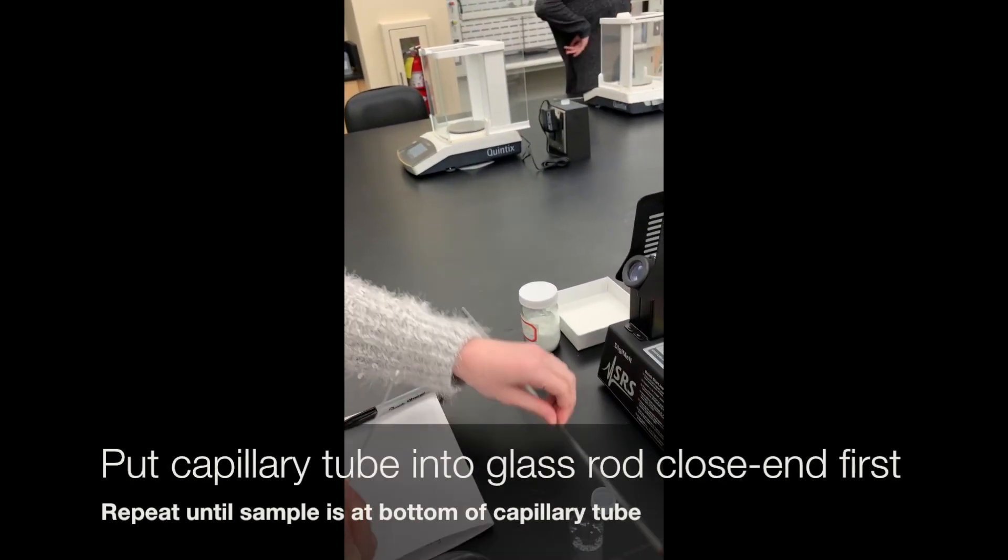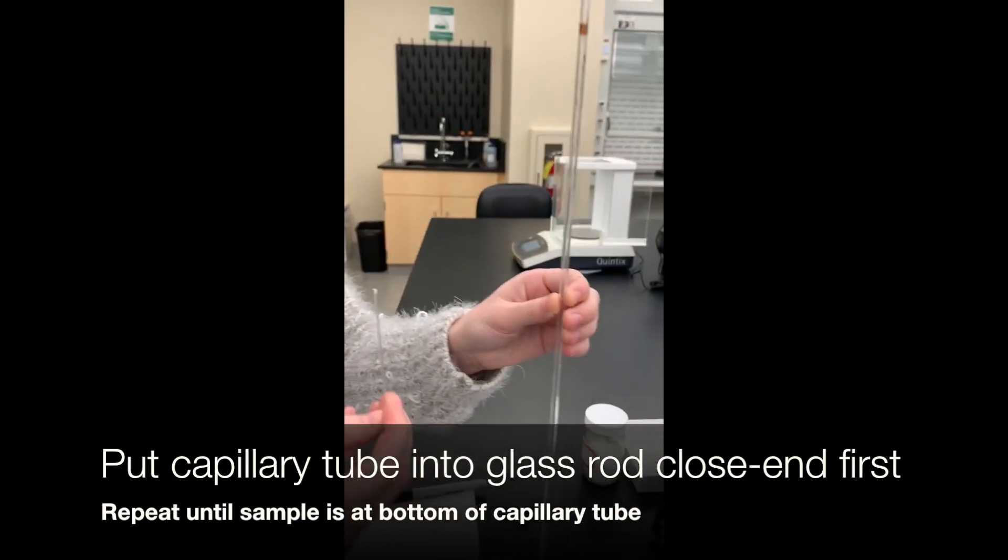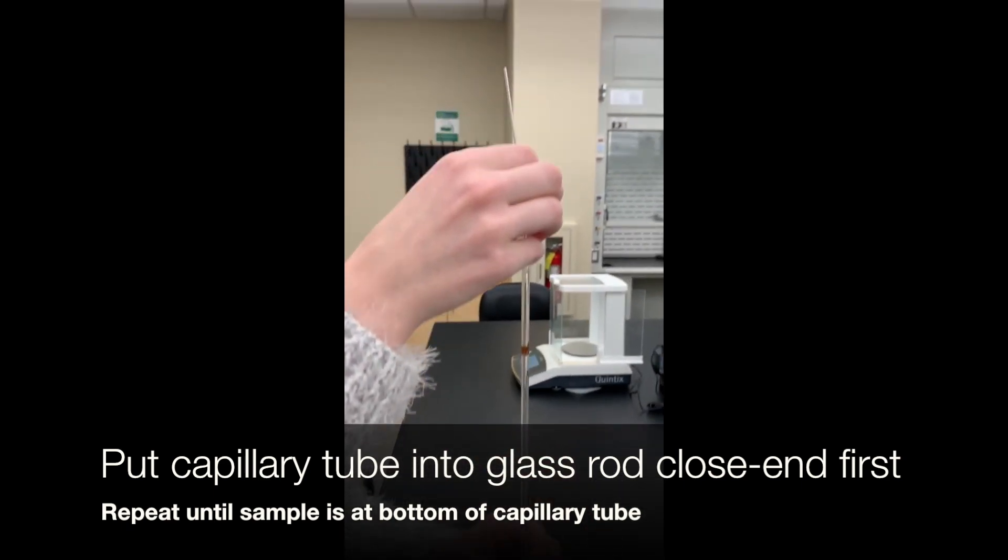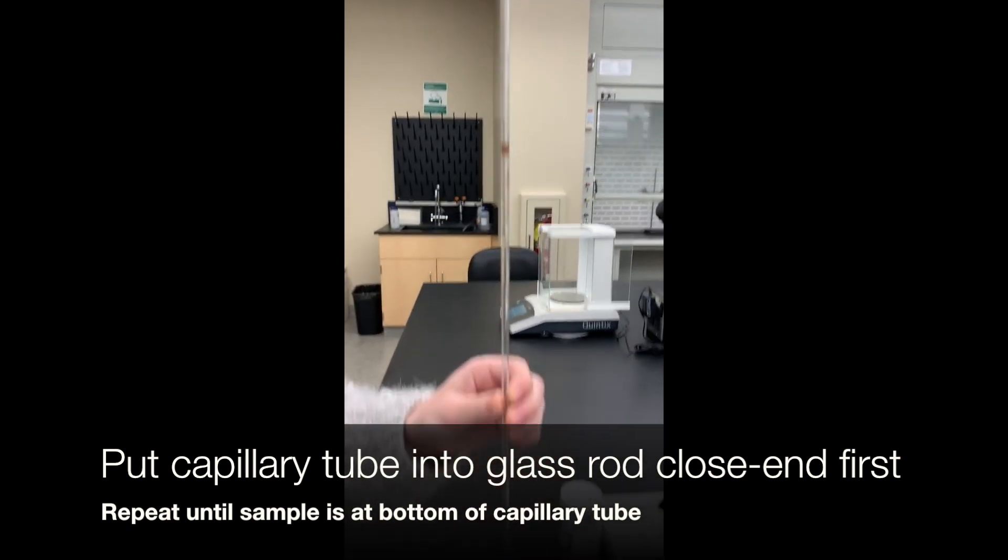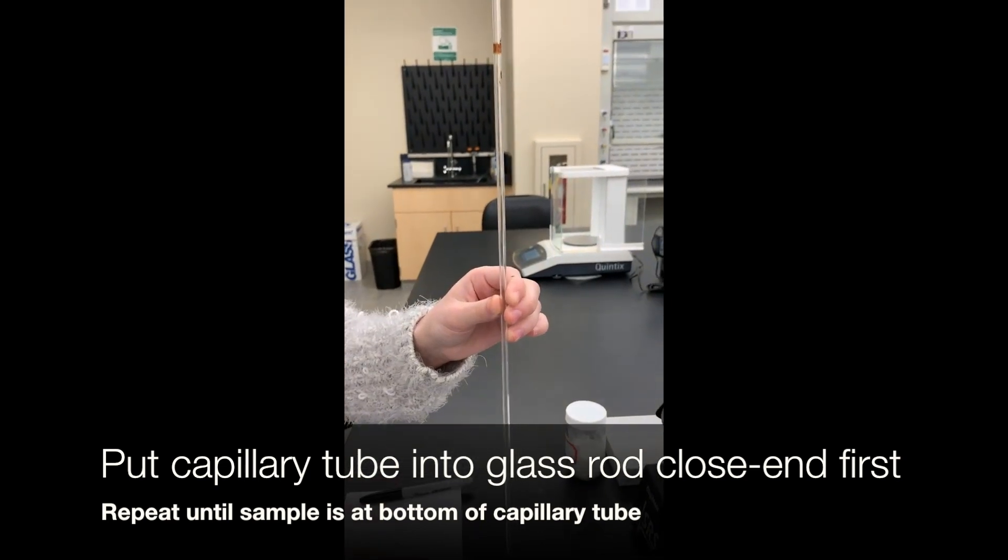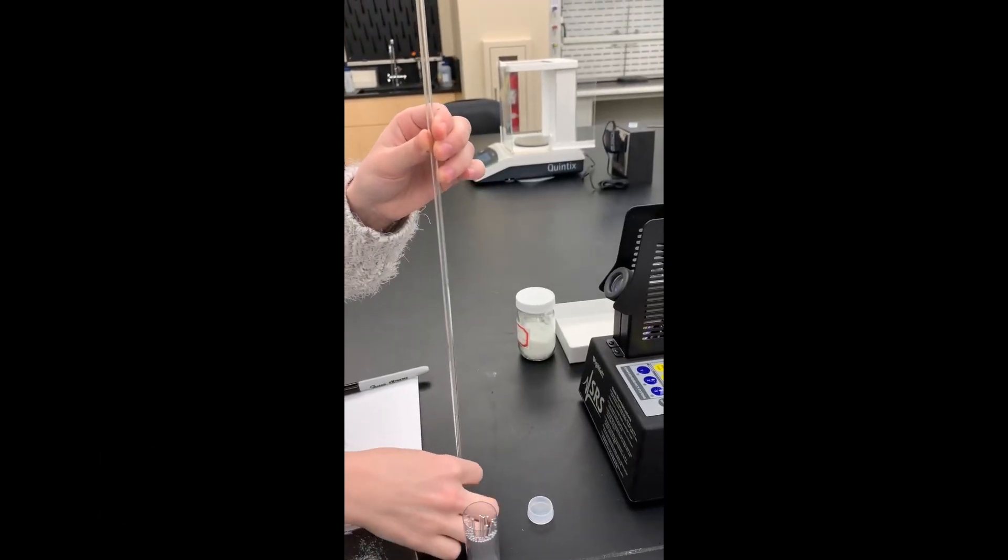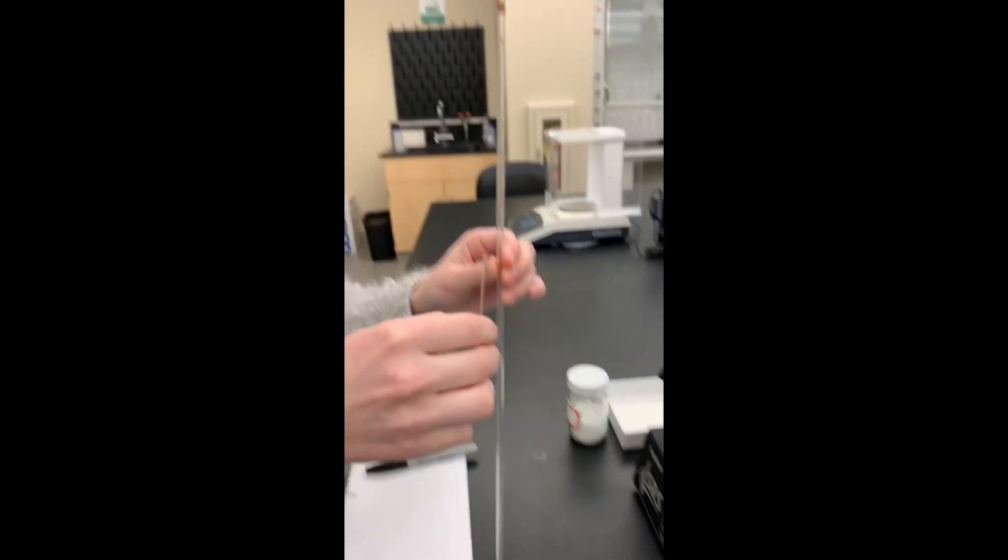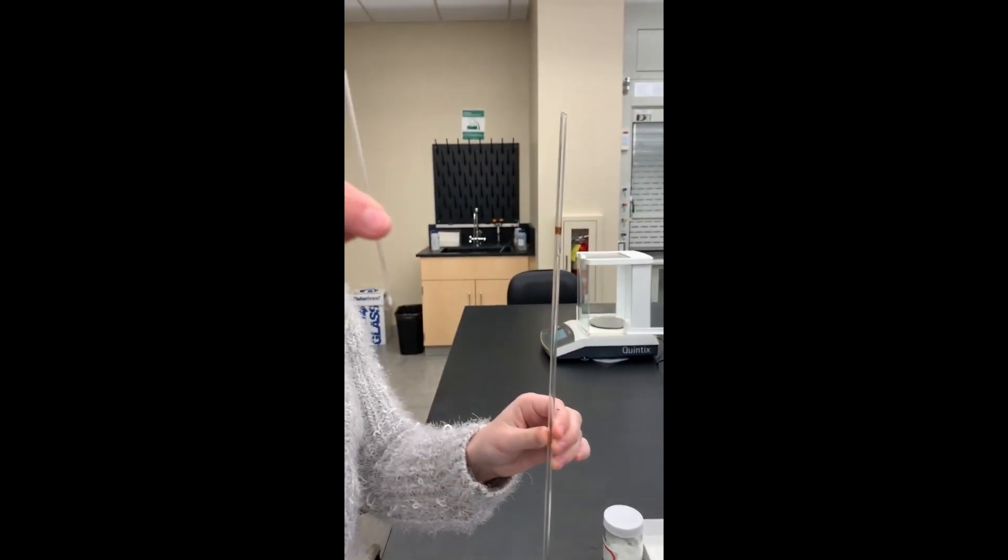Next, you need to push your sample into the closed end of the capillary tube. You will do this using a large glass rod. Place the rod securely on the bench top and drop your capillary tube closed end first into the rod. Repeat this process a few times until the sample is in the closed end of the capillary tube.